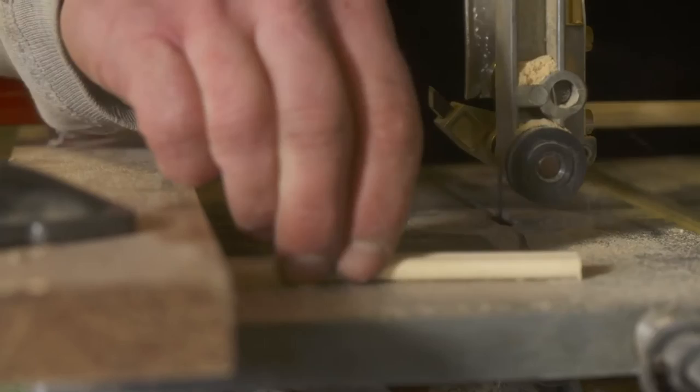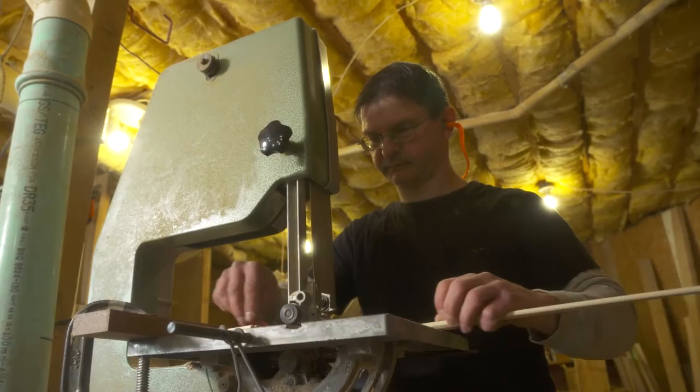Axles allow for the smooth movement of the body pieces in the pull toy. Here, quarter-inch dowels are cut to the exact length on a band saw. These will join the moving body pieces together.